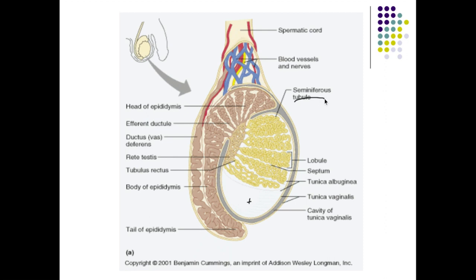Inside the lobules we have anywhere from one to four seminiferous tubules where sperm are produced. Once sperm are produced in the walls of the seminiferous tubules, they are pushed into the lumen and then move via peristalsis to an area called the rete testis, which is responsible for absorbing excess water.